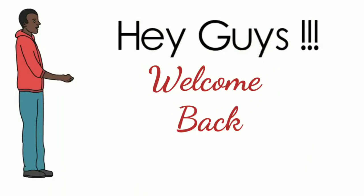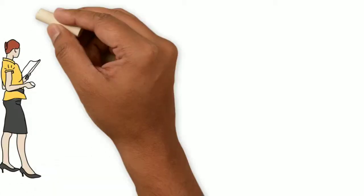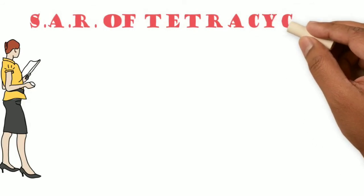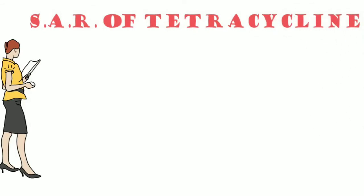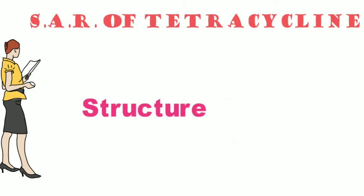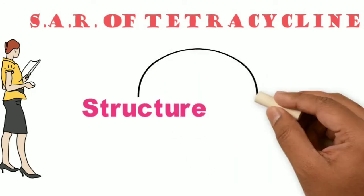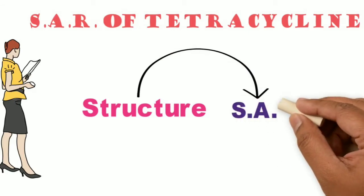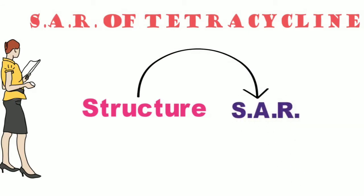Welcome back. Today we're going to learn about the SAR of tetracyclines. Before discussing the video, let me tell you the basic structure of tetracycline so that we can derive SAR from its structure. SAR is something which is relatable to its activity — by doing different modifications, activity will either increase, decrease, or remain unchanged depending upon the change we make.